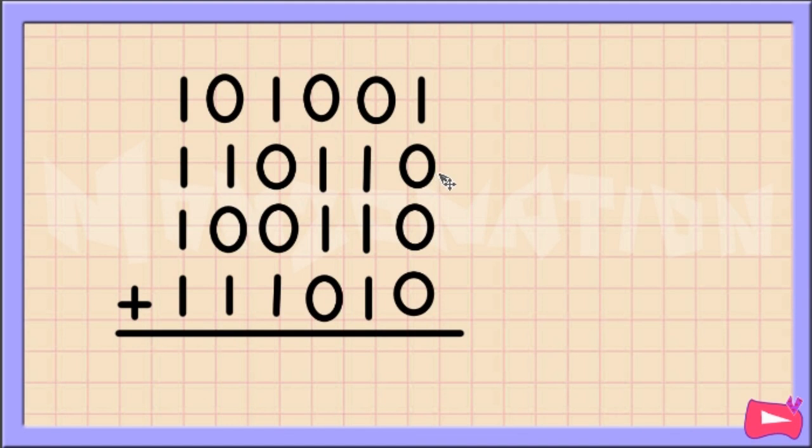The first thing you should do is you should line up these numbers like this, and then add up the numbers column by column, starting with the column on the right side.